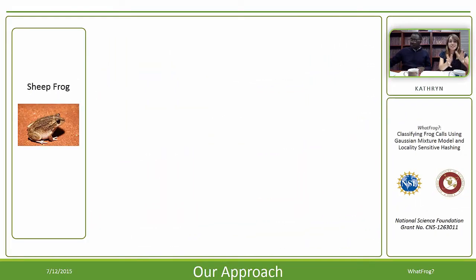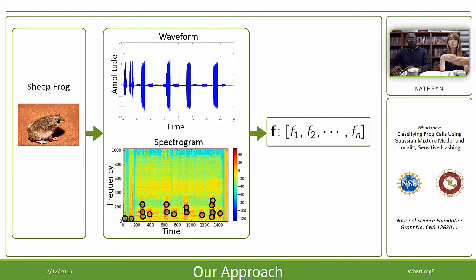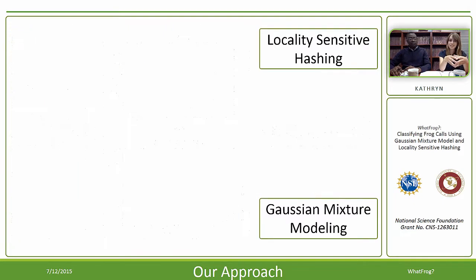The method is to take in the audio of a frog call and create a spectrogram for it. From the spectrogram, we pull out landmarks — these high peaks of energy. And from these, we extract features. These features are what we use to classify the frog call using either locality-sensitive hashing or Gaussian mixture modeling.